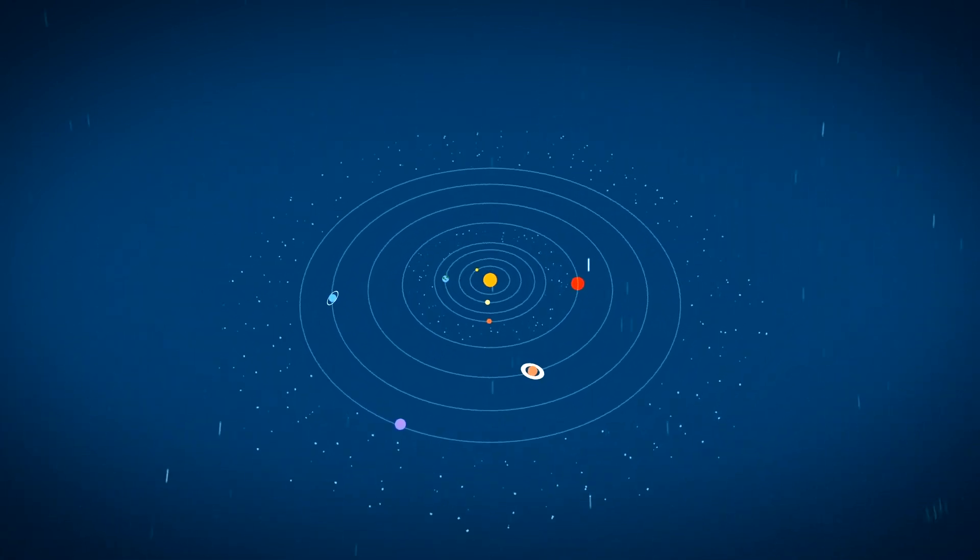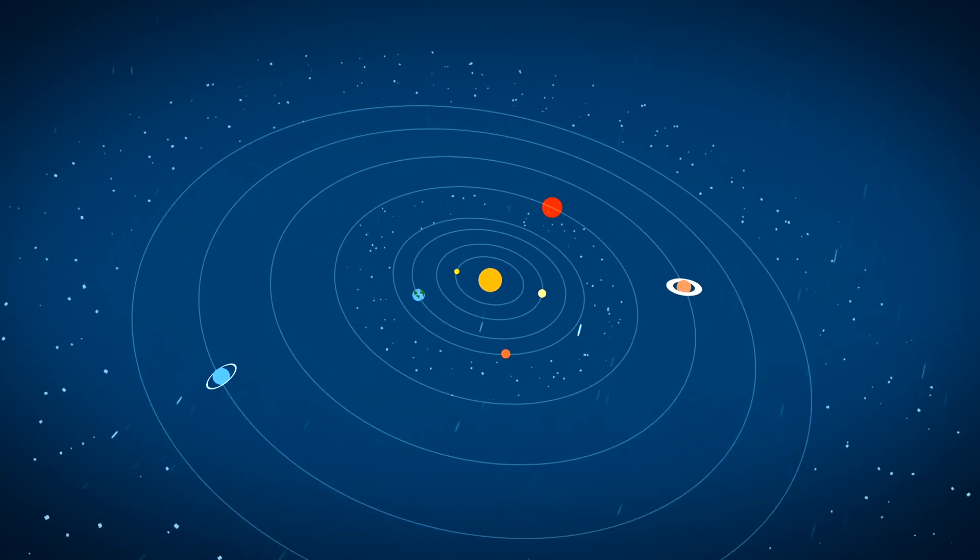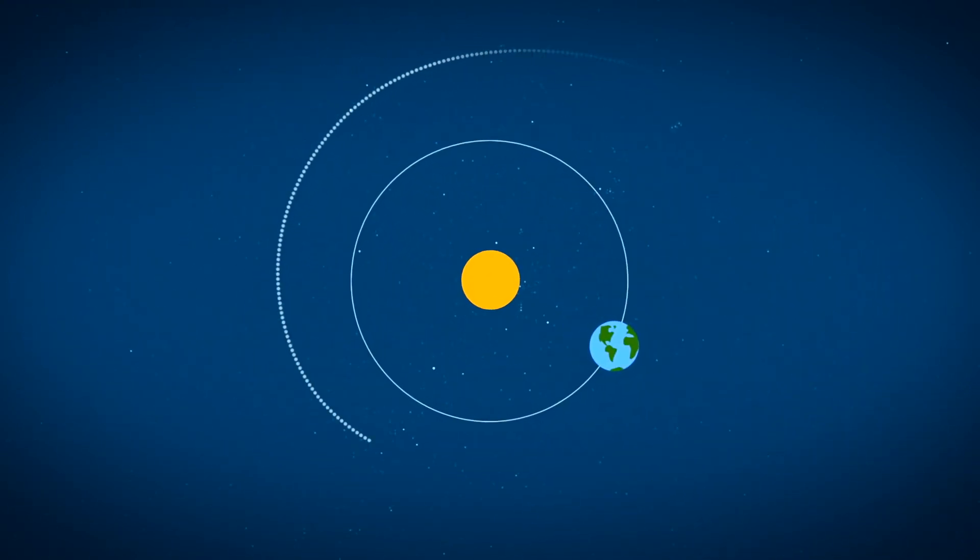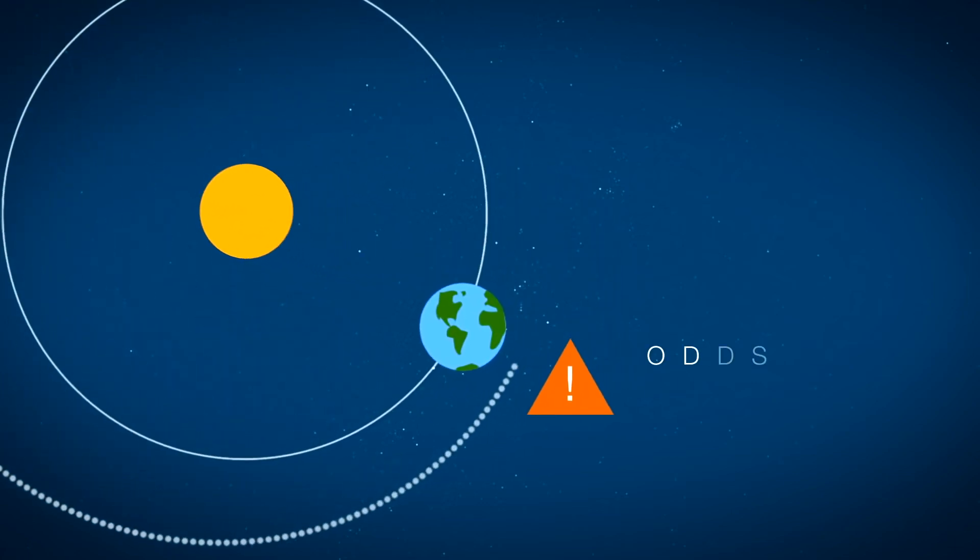Most other asteroids tend to stay grouped together in a few regions of our solar system, yet some still end up in our backyard. So once these asteroids get close, what makes the difference between a near-miss and a potential hit?